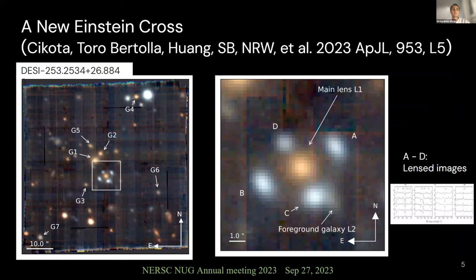One specific example of a lens system is the so-called Einstein cross. Here, the four images coming from the same source form a cross-like pattern with a high degree of symmetry. We can also see the main lens, labeled as L1, and a secondary lens. On the right, we show spectral features for images A, B, C, and D, and they are identical, proving that they all come from the same source.